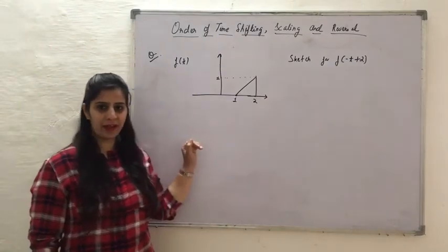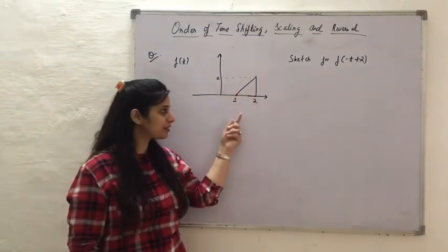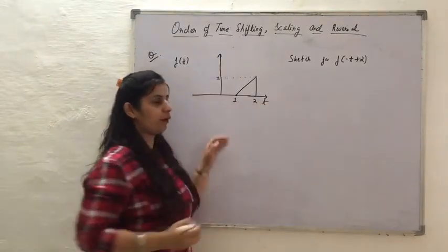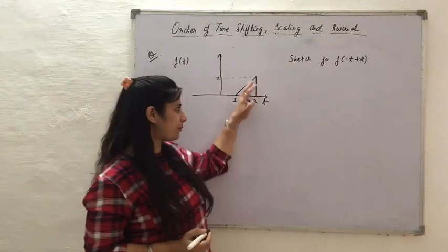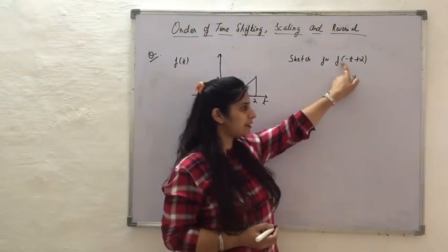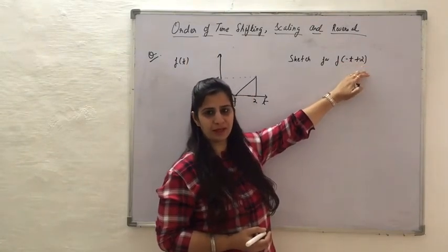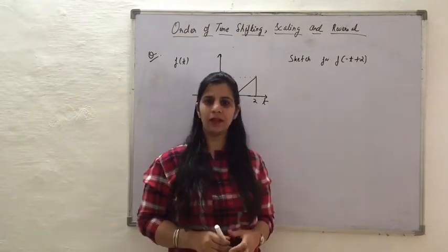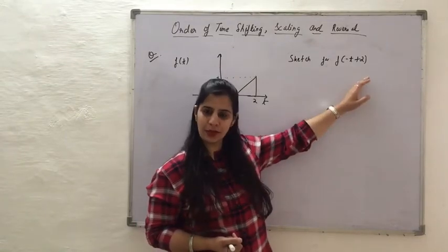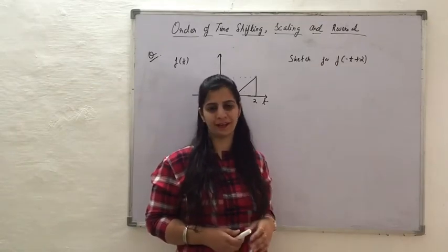The question we have is: the function f is represented by a given waveform with some value between the time interval 1 and 2. We have to apply some operation on f(t) so that the resultant function is f(-t+2) and sketch that waveform. I sincerely request you to try solving it yourself before continuing.